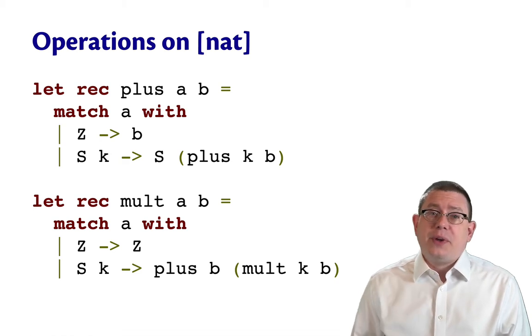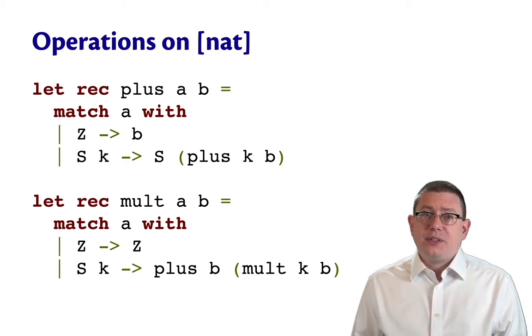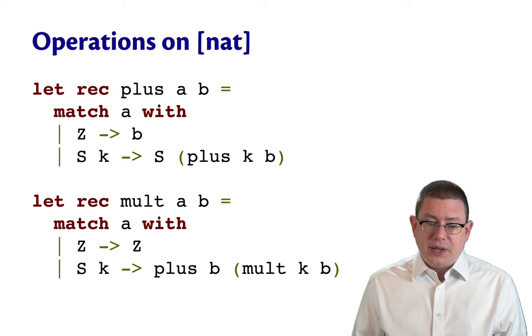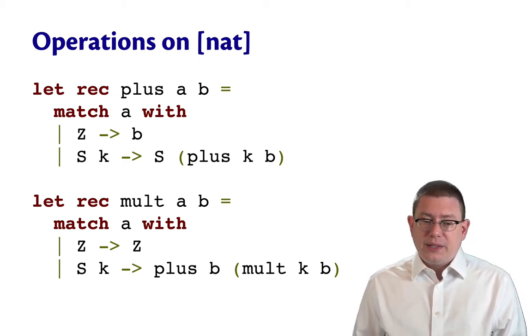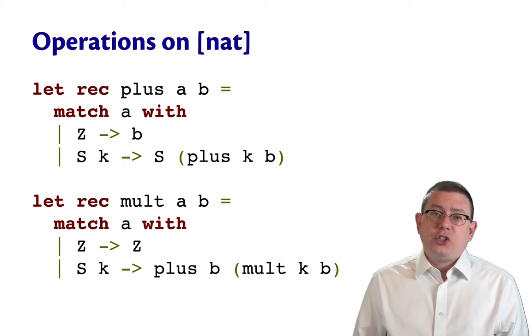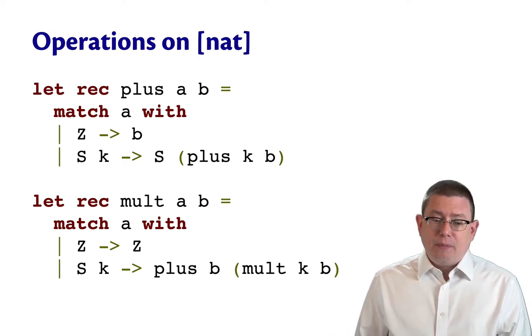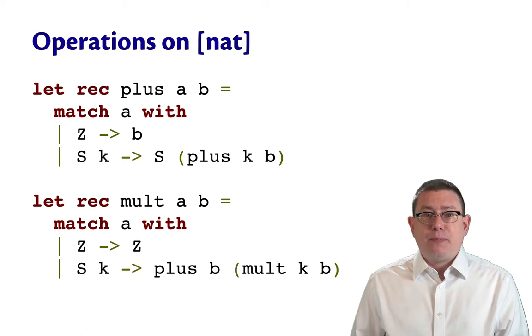You can also implement all the other operations. Some of them are trickier to implement than others. Here's an example of how to implement multiply. I won't walk us through this one other than to point out it's basically doing the same thing. Plus just repeatedly adds one. Mult just repeatedly adds B.